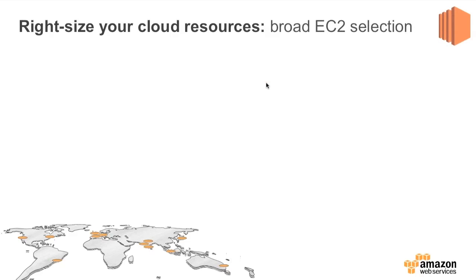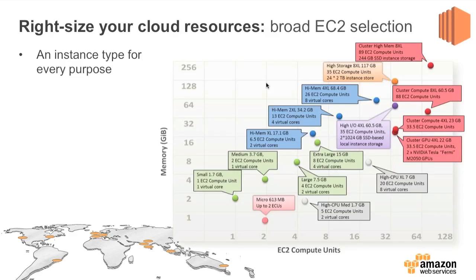So what do we mean when we say right-size your resources? And apologies for this graph — as always seems to be the case when we put something together at Amazon, by the time I present it, it's already out of date. What you've got here is 17 different types of instances that we offer and many different families of instance types.